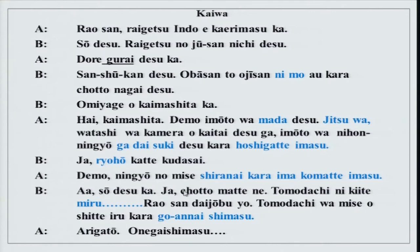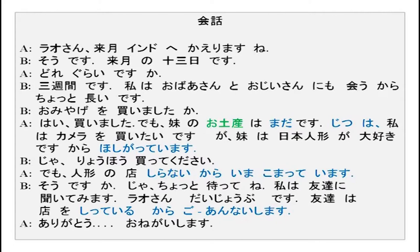You do not have to be worried. Asou desu ka. Jaa chotto matte ne — wait for a minute. Tomodachi ni kiite miru. Now, so far you have done masu form always at the end, but here the sentence ends with miru, which is a plain form. When talking to friends in an informal situation, you may use the plain form instead of masu form. After five minutes he comes back and says: Rao-san daijobu desu yo. Tomodachi wa mise wo shitte iru kara, go annai shimasu — he knows the shop, thus he will guide us. And Rao-san says arigatou.